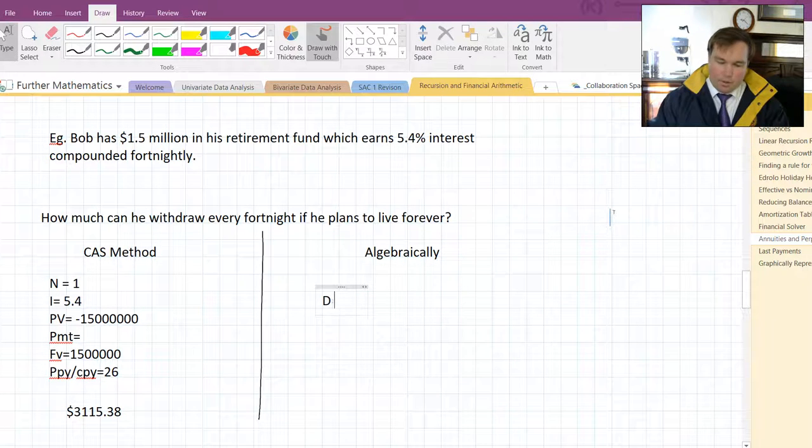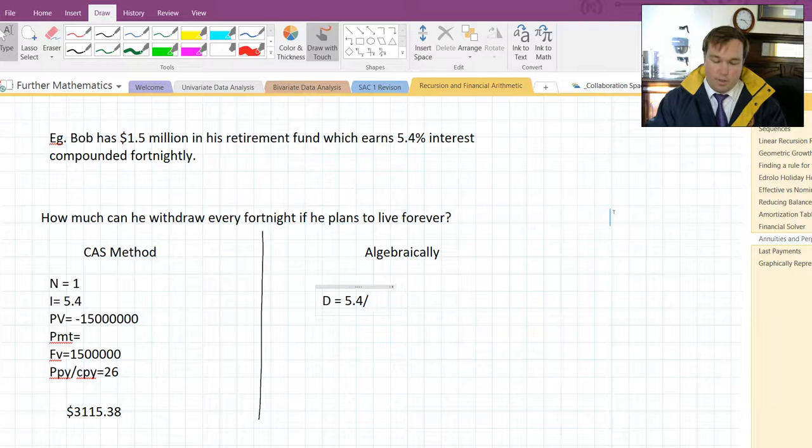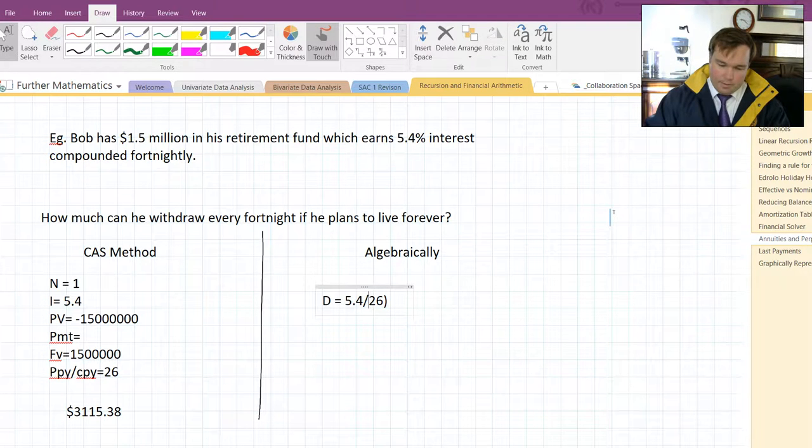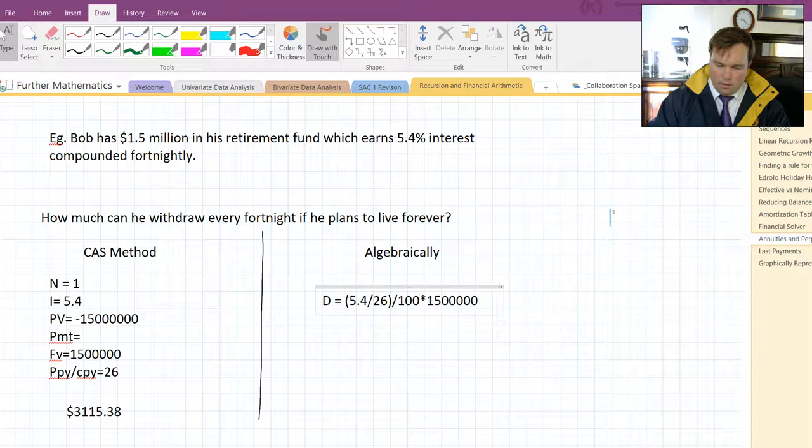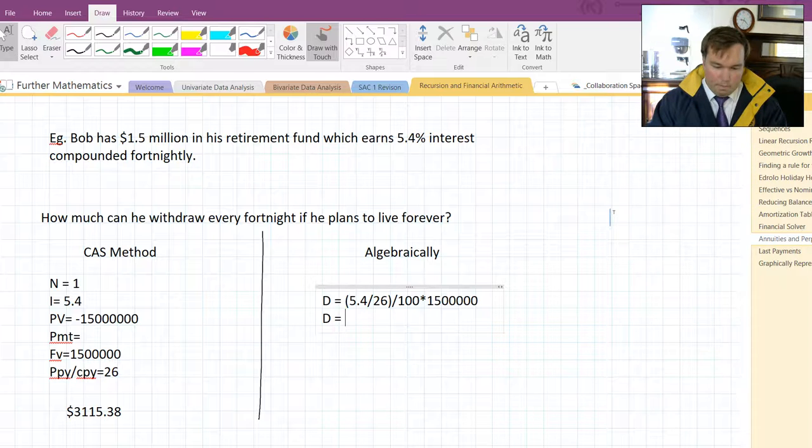Algebraically, the amount he can withdraw, or the difference he takes out each time, is the R per compounding period, so it's not just 5.4, it's 5.4 divided by 26, all of that on 100, times 1.5 million. And that will come out to be exactly the same. And you should know how to do it both ways.